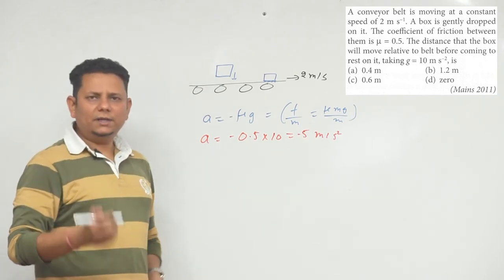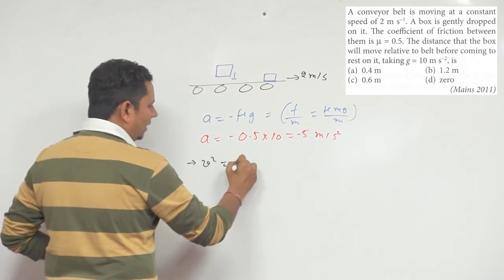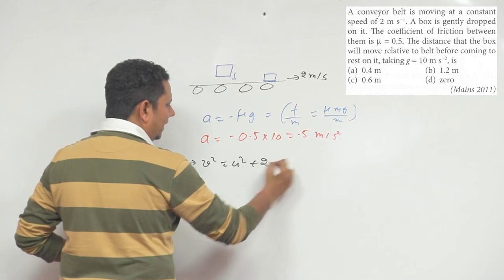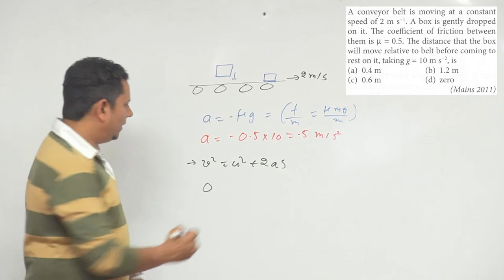Now if we apply the third equation of motion here, v square equals u square plus 2as. The final velocity v in this frame is 0.